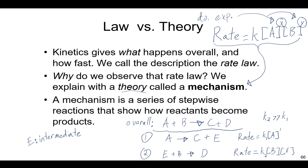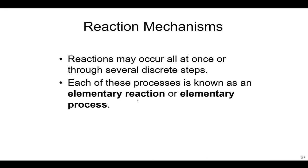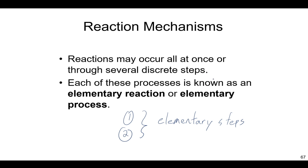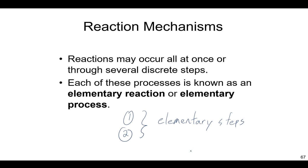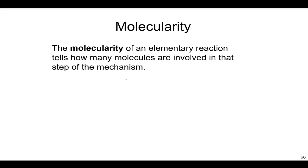Each of those steps is known as an elementary reaction — also called elementary steps or elementary processes. You could have a one-step reaction where the overall reaction is just that one mechanistic step, such as A and B colliding to make C plus D. But a lot of times you'll have multiple elementary steps for the overall reaction. The molecularity of each step tells us how many molecules are involved in that step of the mechanism.